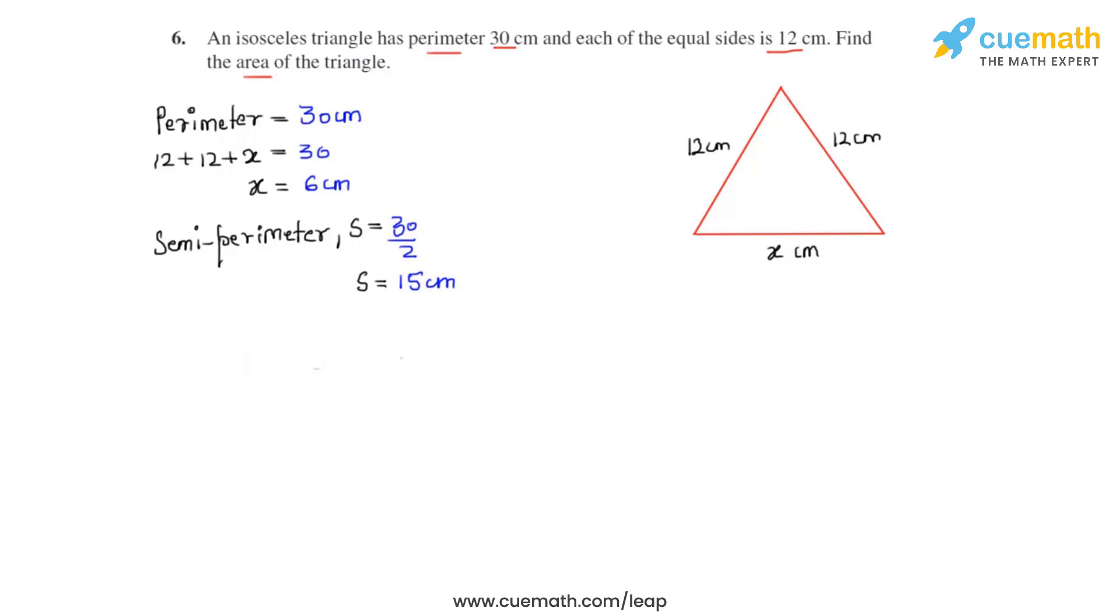Now that we know all the parameters, we may write Heron's formula by which we can find the area of this triangle. So let's write A to be equal to under root s times s minus a times s minus b times s minus c, where s is the semiperimeter and a, b, c are the three sides of this given triangle.